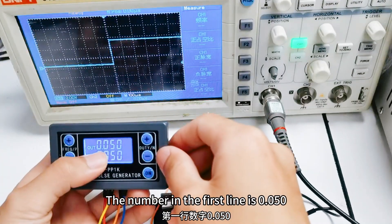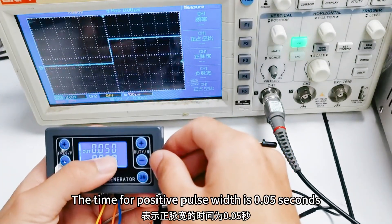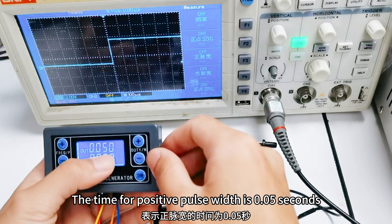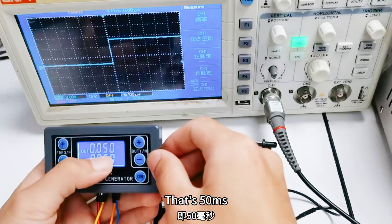The number in the first line is 0.05. The time for positive pause width is 0.05 seconds, that's 50 milliseconds.